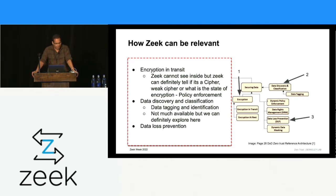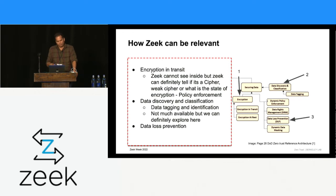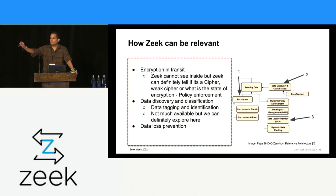There's data discovery and classification. Can we actually look at the data and start tagging it in the network — what kind of data is going through? Of course there's a fight with encryption and other aspects. But maybe we can think about higher-profile things: I know these are HPC servers, I know these are backup servers — maybe we can start tagging in a certain manner. I speculate.